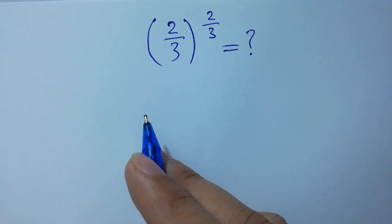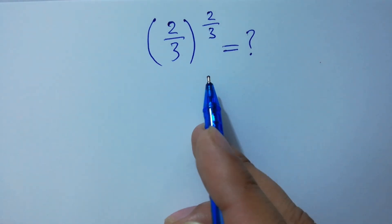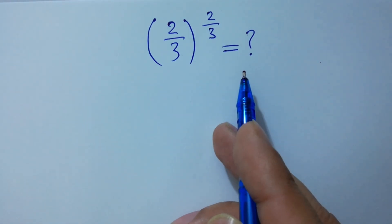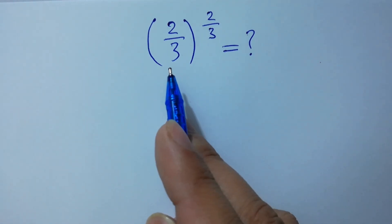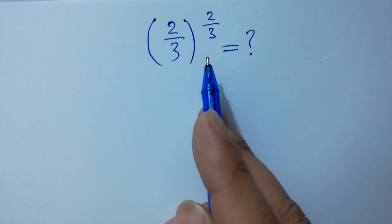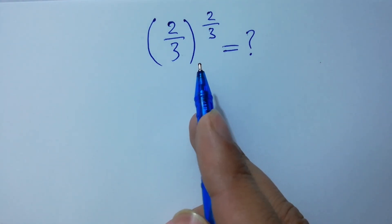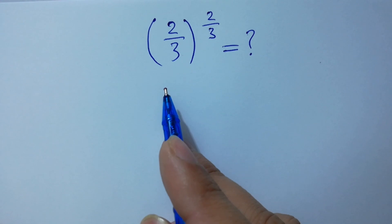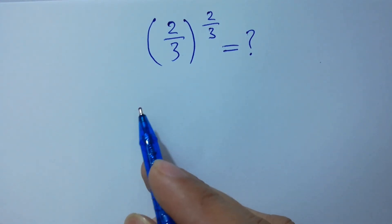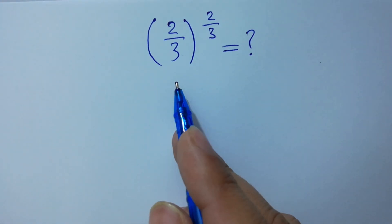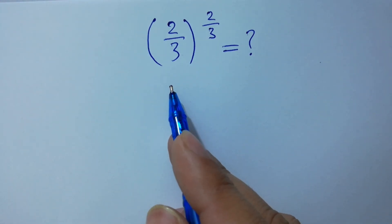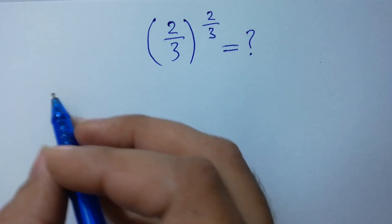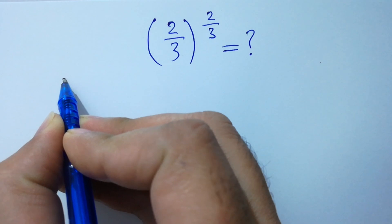Hello friends. What is equal to 2 over 3 to the power 2 over 3? This is a power question. Can you simplify this? Let's have a solution.